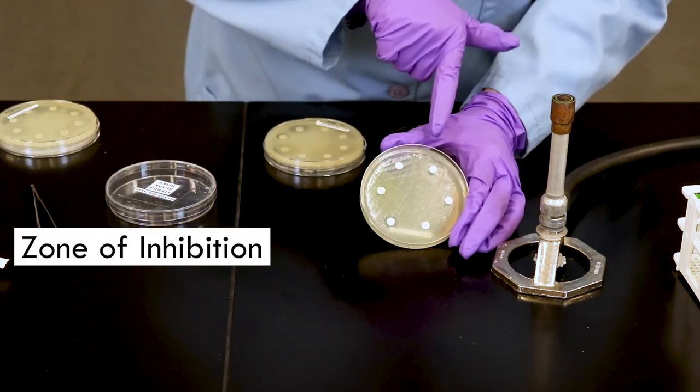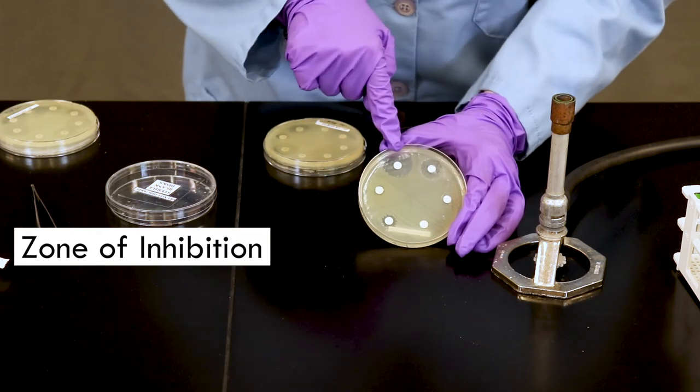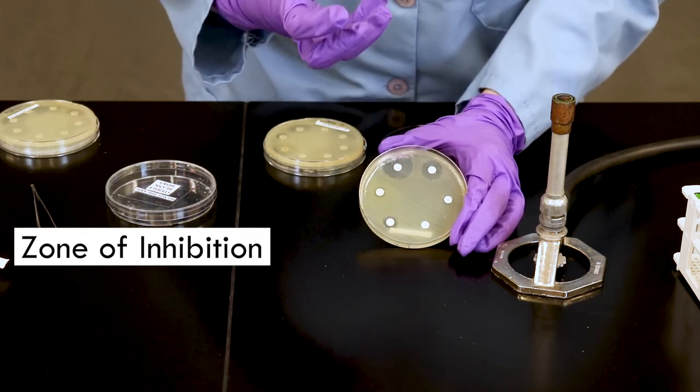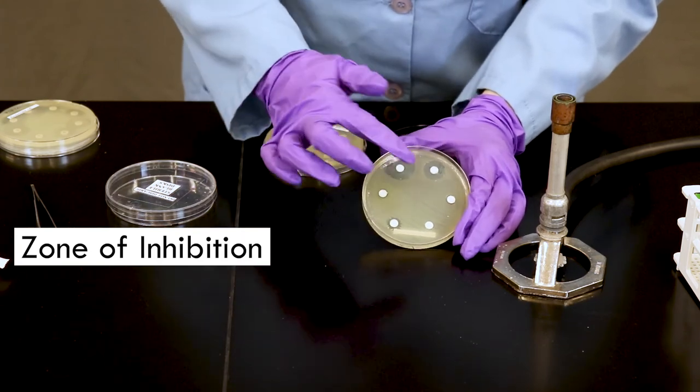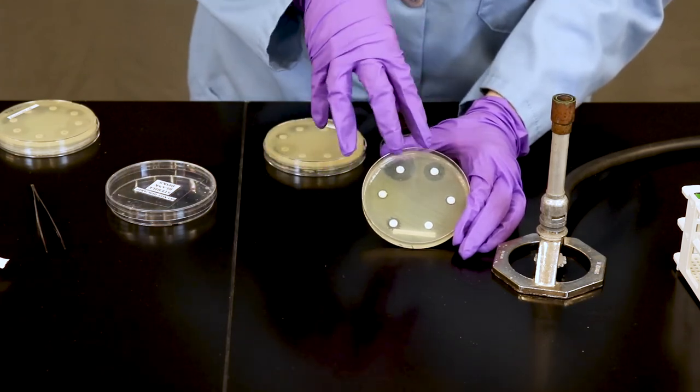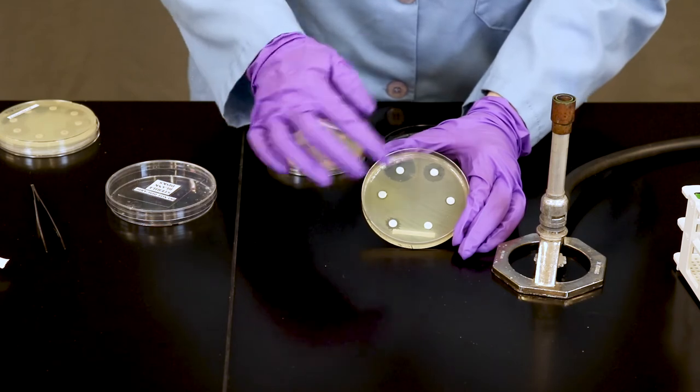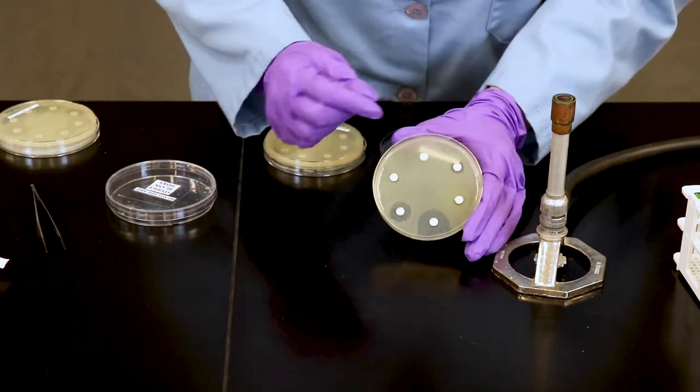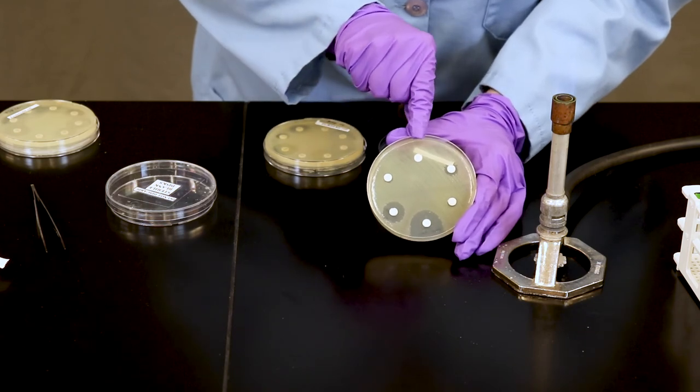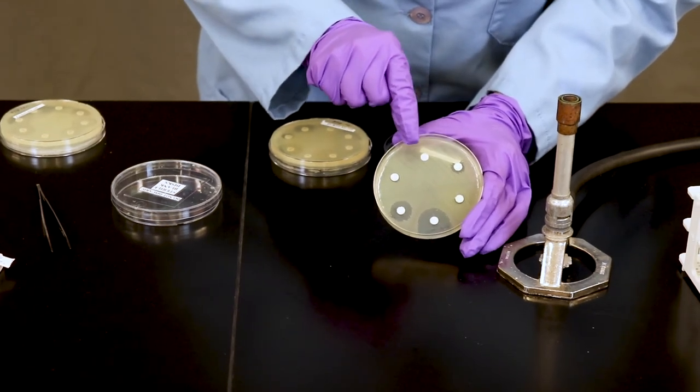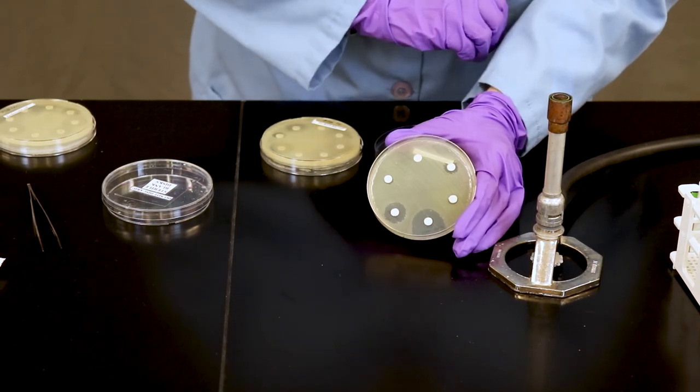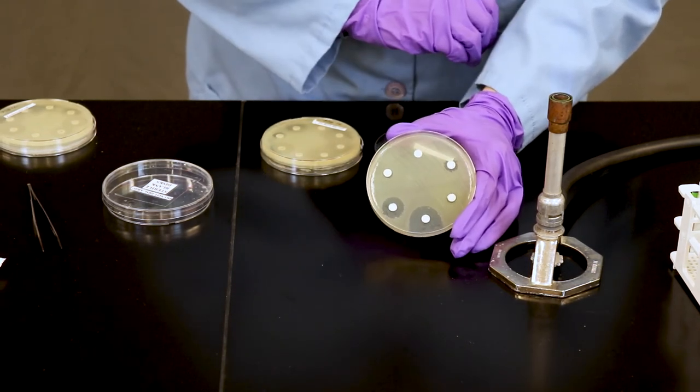So notice for these two particular chemical agents up here we see a clearing or a zone of dead cells present around where the chemical diffused into the agar. If the chemical agent was not effective, like this chemical agent up top that I'm pointing to here, you'll notice there's no zone of inhibition present. So we'll take a look at our data, and you guys are going to analyze this for your lab worksheet.